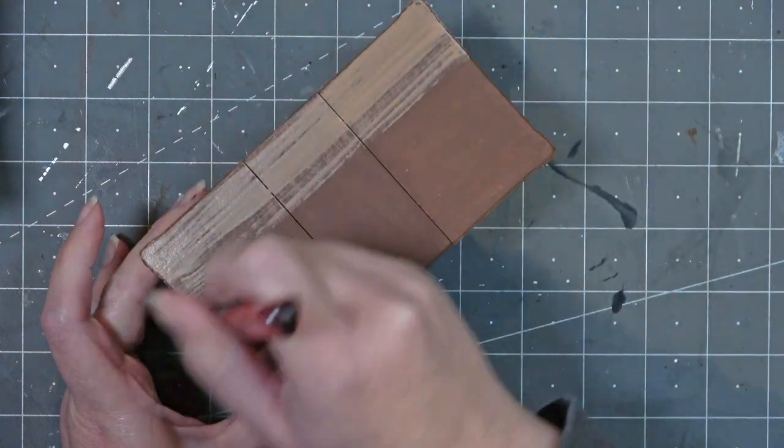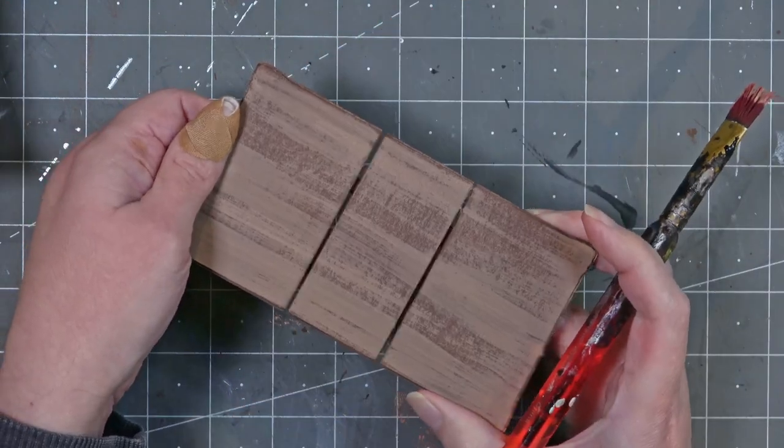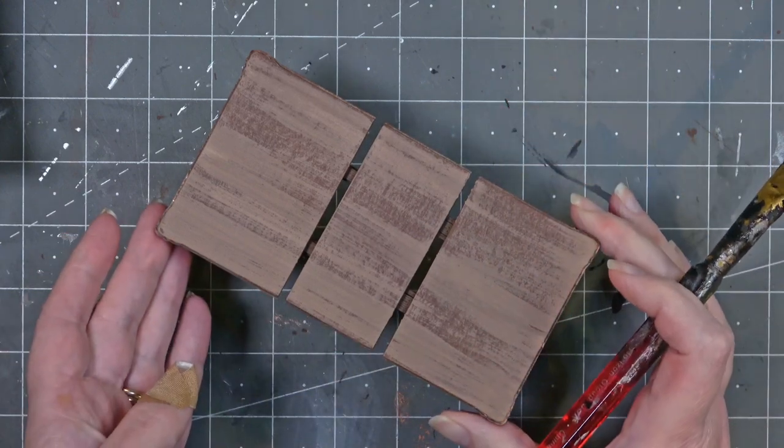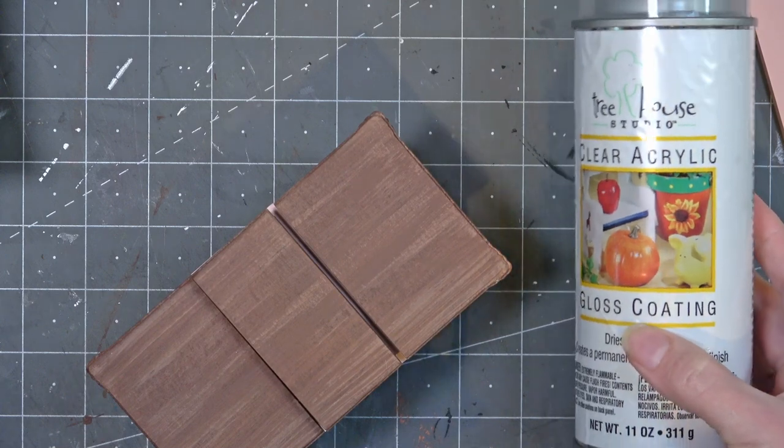Now that my base coat is complete I'm going over the entire top of the table trying to get a wood grain effect. I'm doing this with the pieces together however while the paint is drying I want to separate it out so that my leaf doesn't get glued to the other pieces.